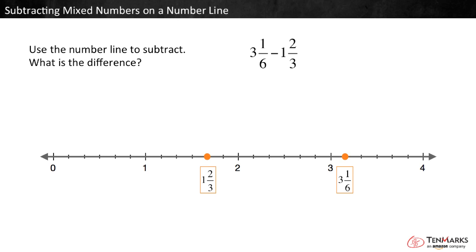Finally, find the distance between the two numbers by counting up. Starting at 1 and 2 thirds, count up to the next hole. We hopped 2 sixths.